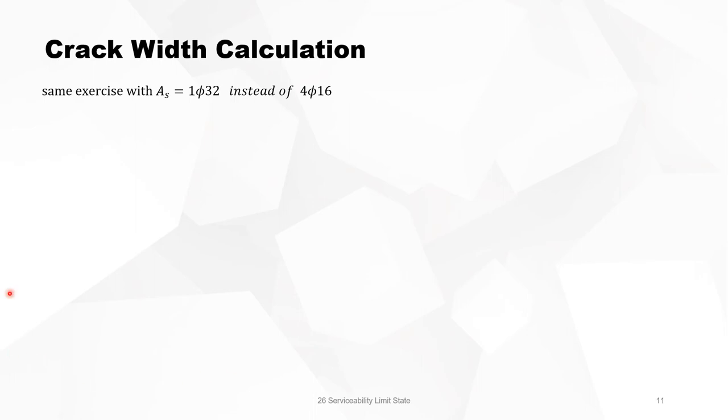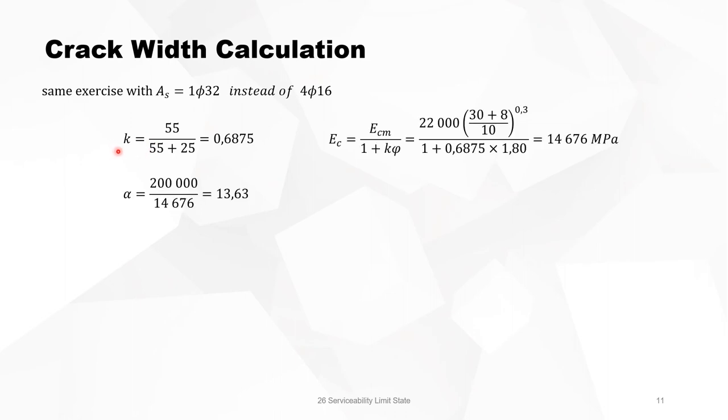Now we will do exactly the same exercise with only one diameter 32. Of course, in reality, a beam has at least two rebars instead of one. But this is just for the purpose of comparing the exact area of 800 square millimeters to compare it with the calculated crack width. The K value stays the same. There is no difference. In the calculation of alpha, it does not interfere.